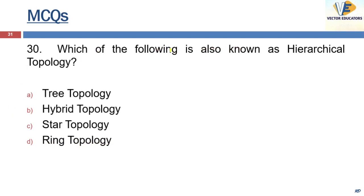Which of the following is also known as hierarchical topology? The answer is tree topology. Tree topology is also called hierarchical topology — it imitates extended star topology and inherits the properties of bus topology.